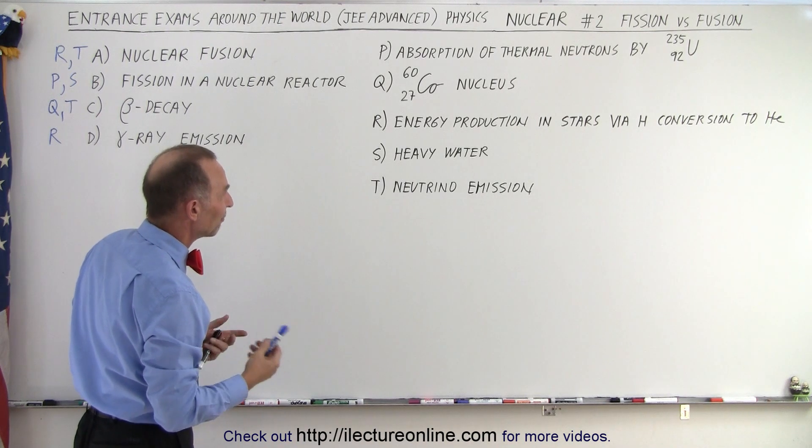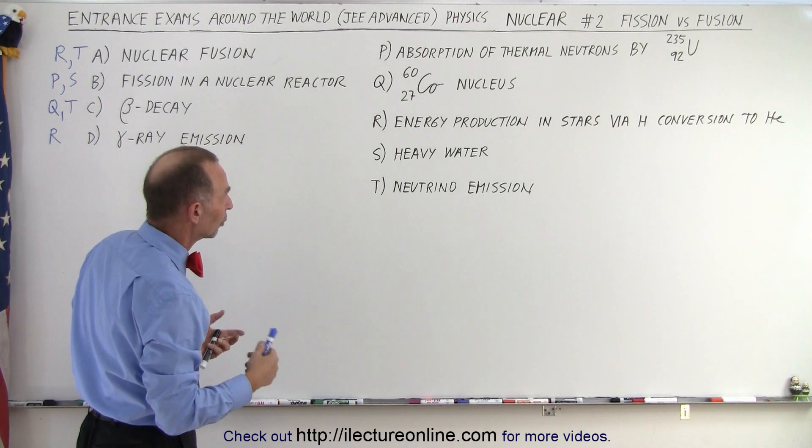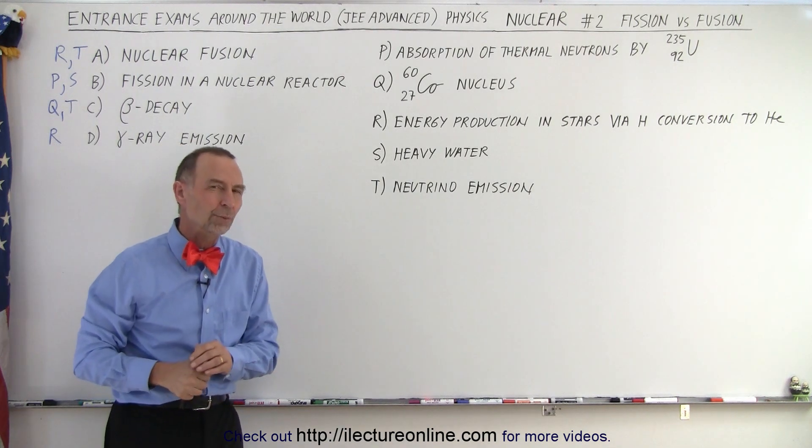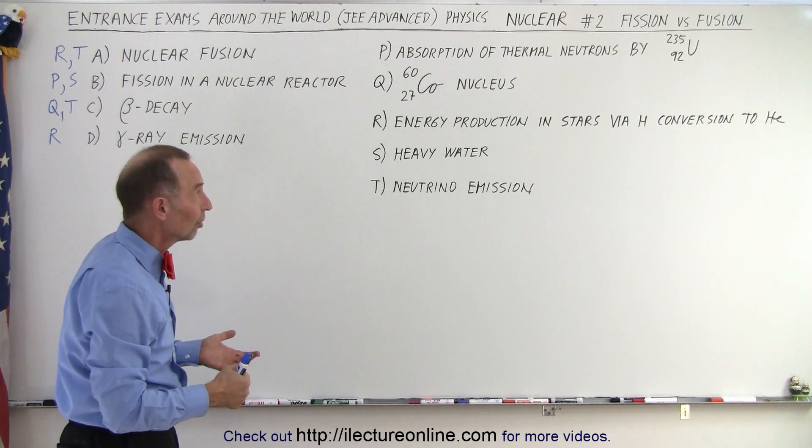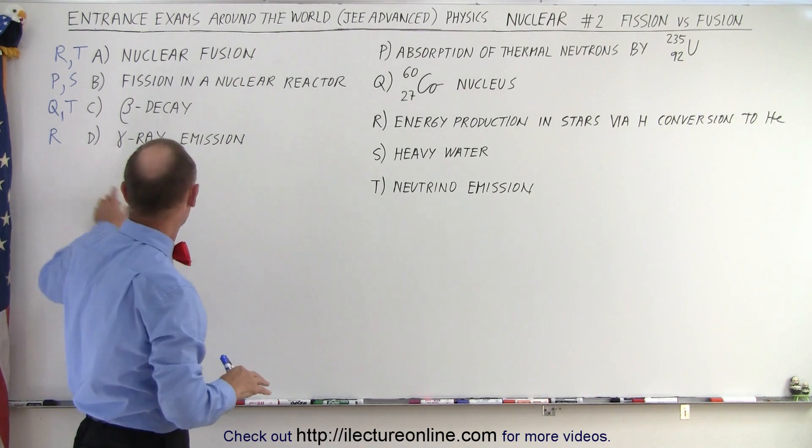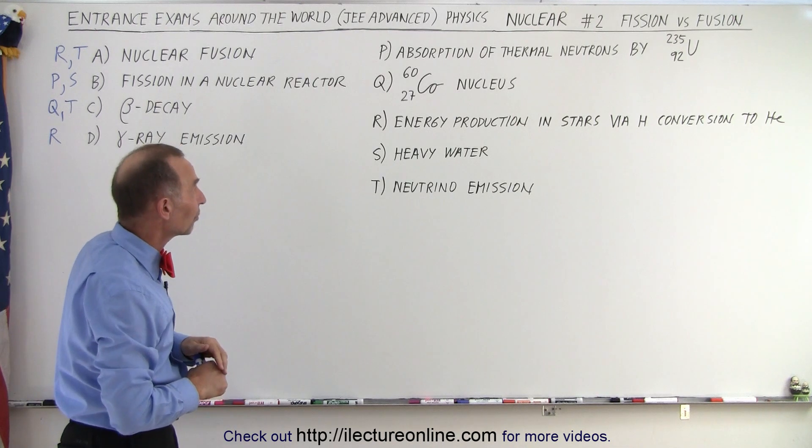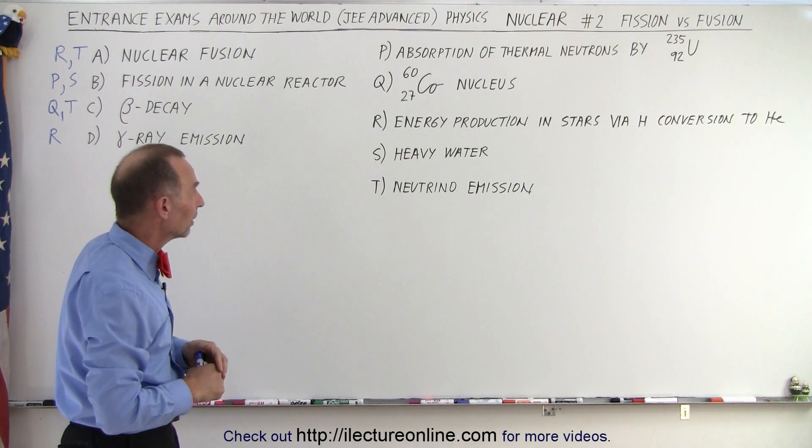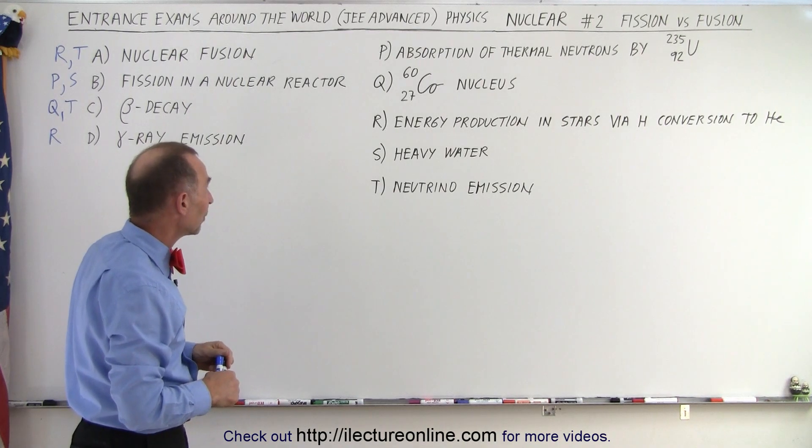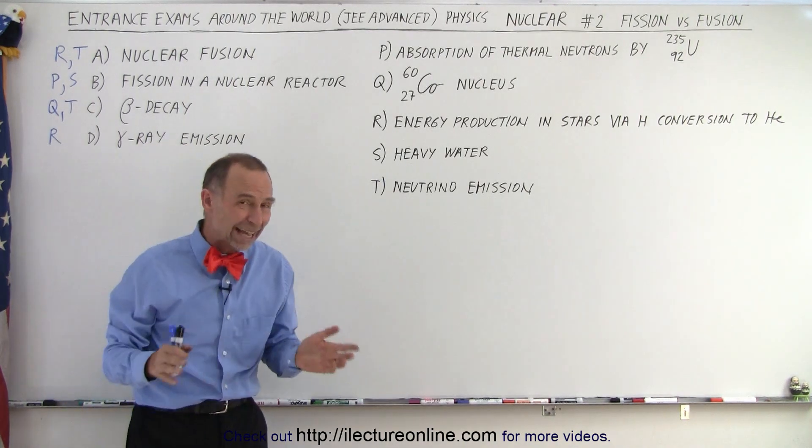Neutrino emission, I would say no. Heavy water, no. Cobalt nucleus, I'd say no. And typically, it's not something we associate with nuclear reactors using fission instead of fusion. So I'd say that R is probably the only possible answer that we have from this particular set when it comes to gamma ray emissions. And so, those are the answers.